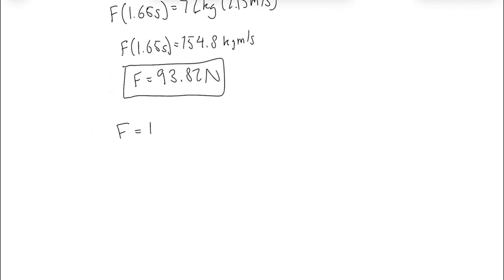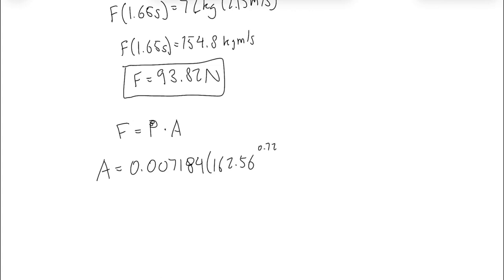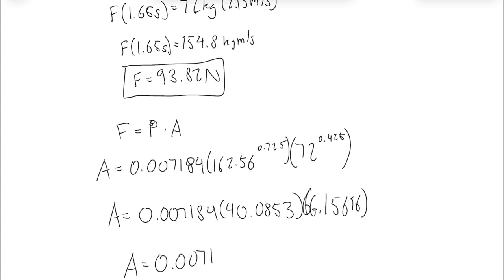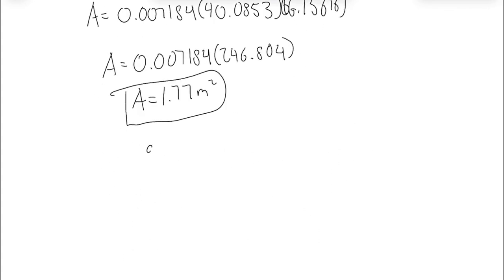Now we need to find the sound pressure, which can be found using f equals pa, where f is the force, p is the sound pressure, and a is the surface area of the object. After calculating the surface area of Marty, it comes out to about 1.77 meters squared. The sound pressure is just the force divided by the surface area, giving us a sound pressure of 53.01 pascals, or 128.47 decibels — loud enough to deafen Marty in reality.